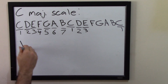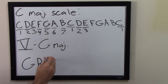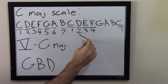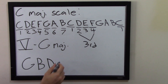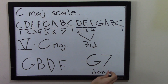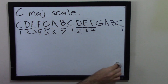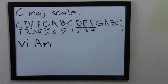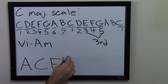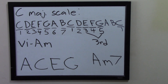When you start on the 5th degree, you get G major — G, B, and D. If you add the 7th, you go up a third from D to get F, so you have G, B, D, and F. That is a dominant 7th chord. So the 5th degree gives you a dominant 7th: the triad is major and the 7th is minor. If you start on the 6th degree, that's A. You take A, C, and E — A minor chord. The 7th above E is G, so you have A, C, E, and G. That is an A minor 7th. Everybody knows that, right?